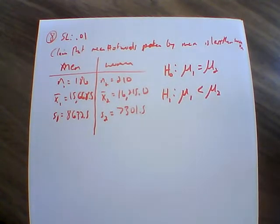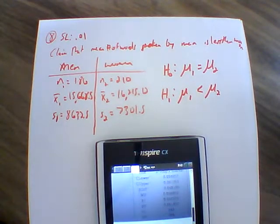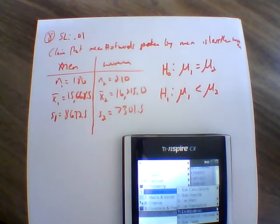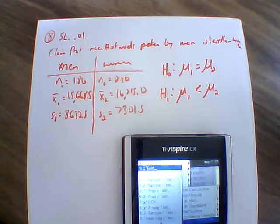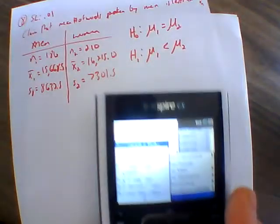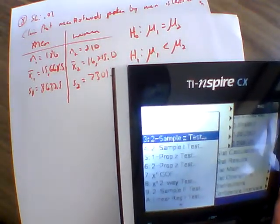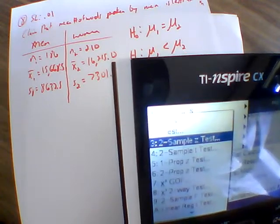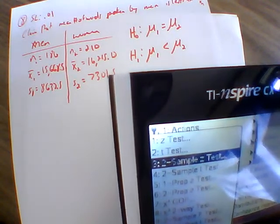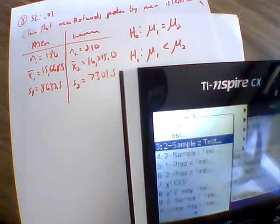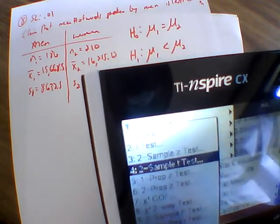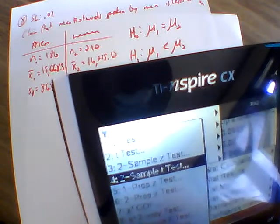Now we go to our calculator. A lot of this is just going to be the calculator doing the work — it's about being able to set up the problem and knowing what operations to go into. We go to menu, statistics, stat tests, and we look at a two-sample test. We have a two-sample Z-test and a two-sample T-test. Z is only used when we know the population standard deviation. Since we don't know the population standard deviations, we are going to use the two-sample T-test.